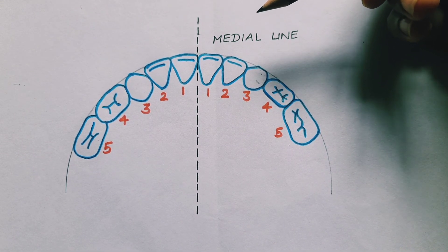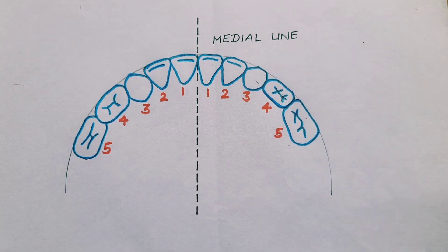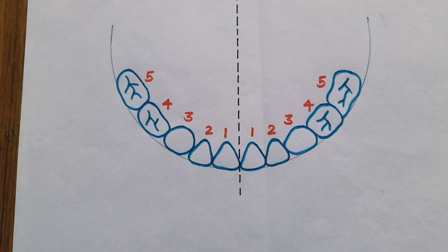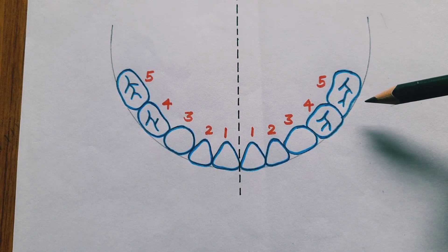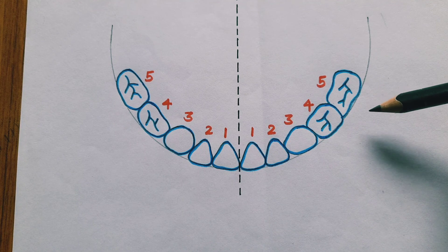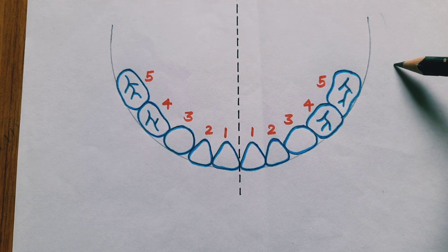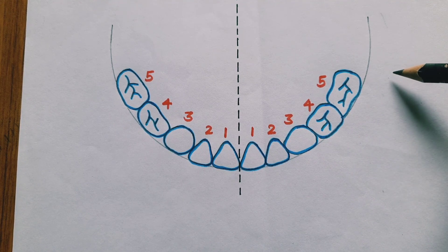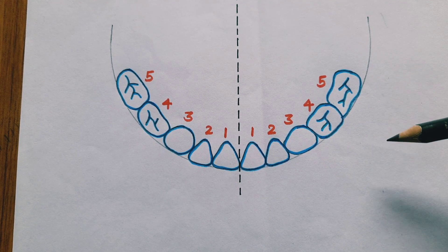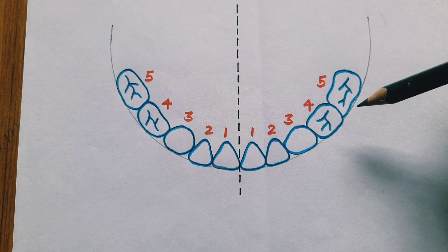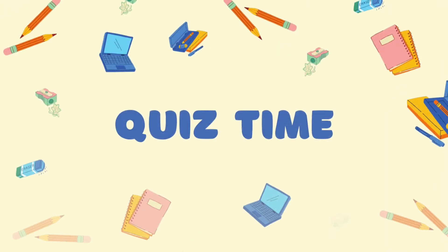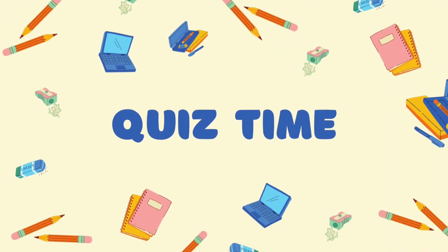Now what about the lower jaw? We also get 10 teeth from the lower jaw, and together we get 20 teeth on adding the ones from both jaws.